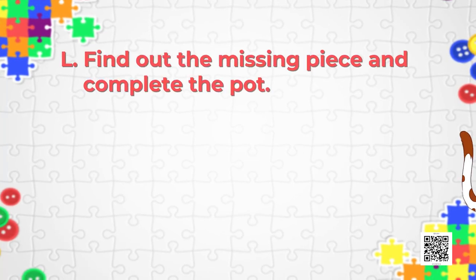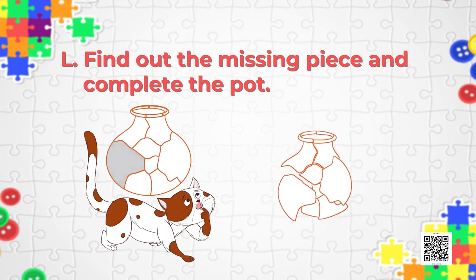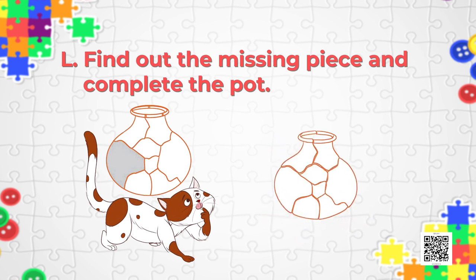Now Puzzle L is: find out the missing piece and complete the pot — the broken pot. You just have to identify the broken piece and put it there to complete the puzzle. I hope that was very easy. You all are very smart!